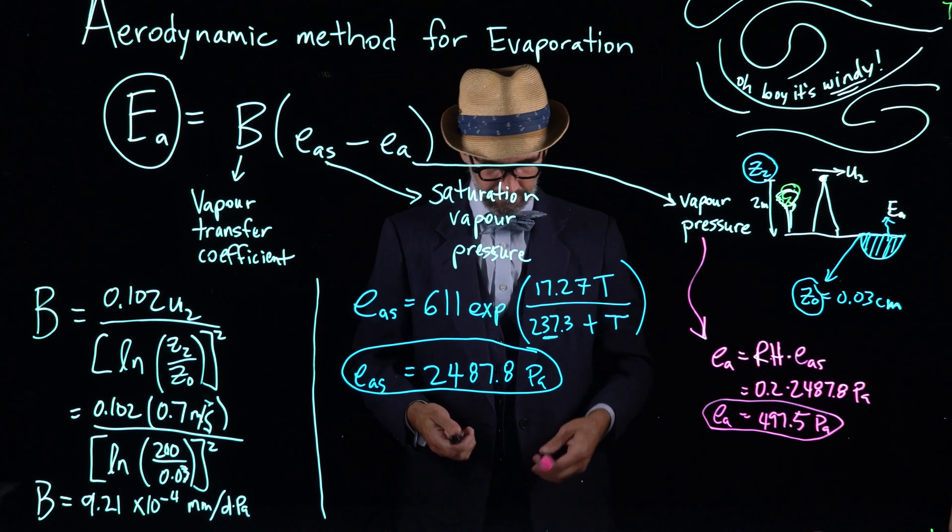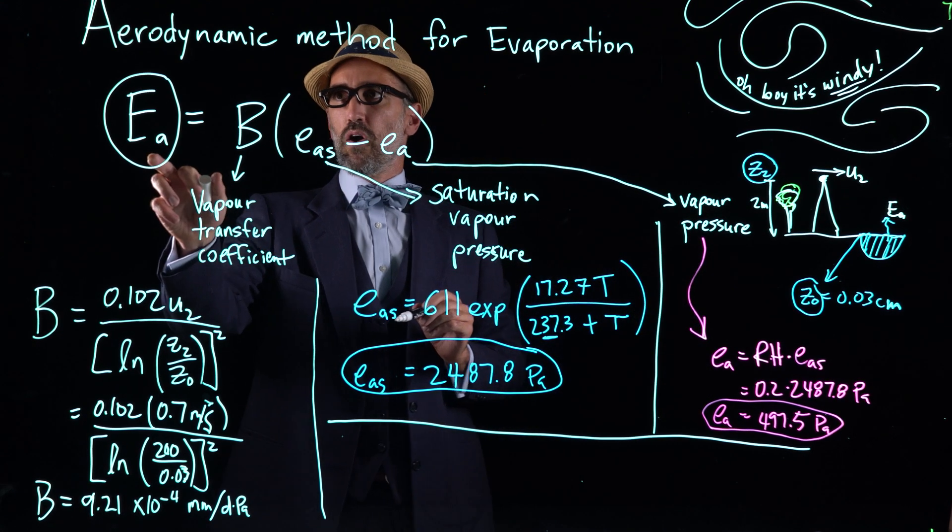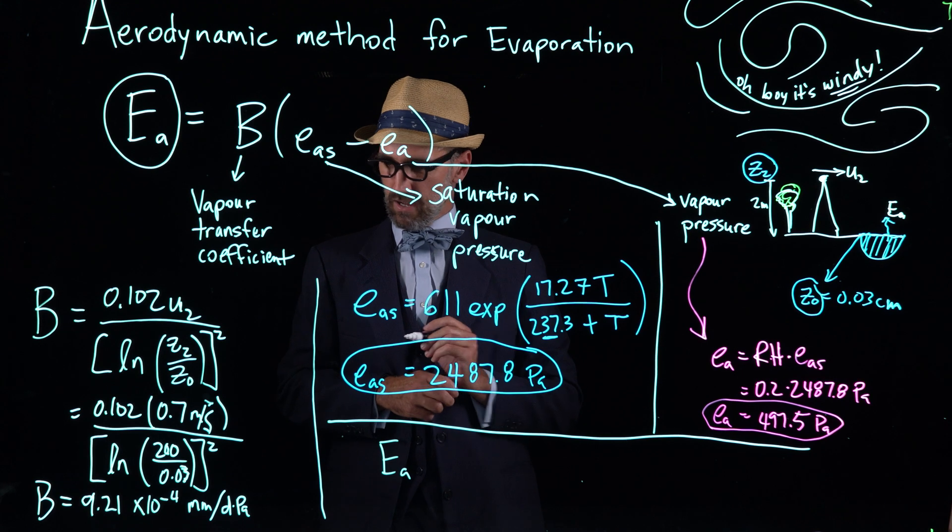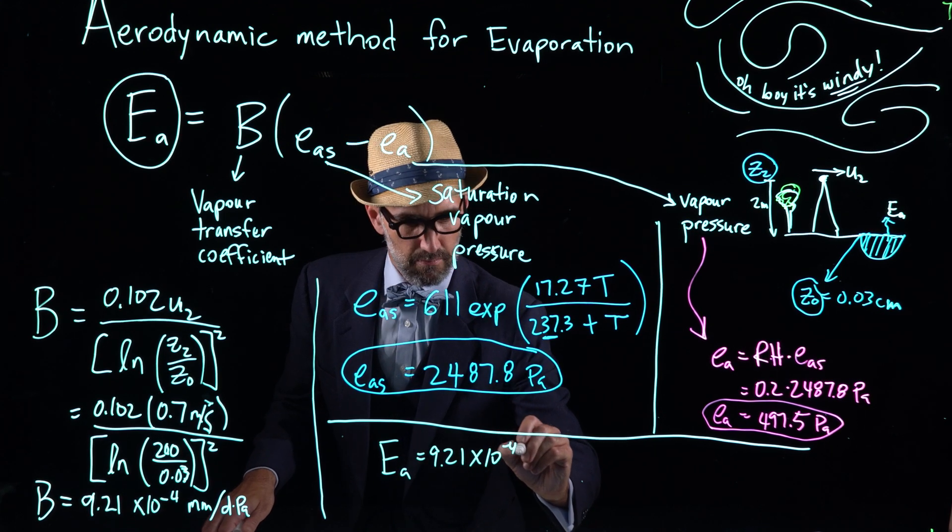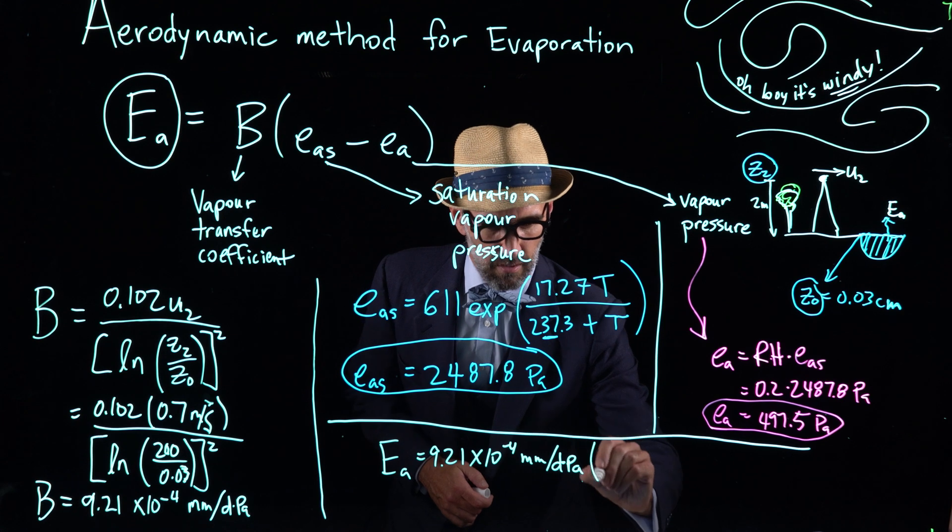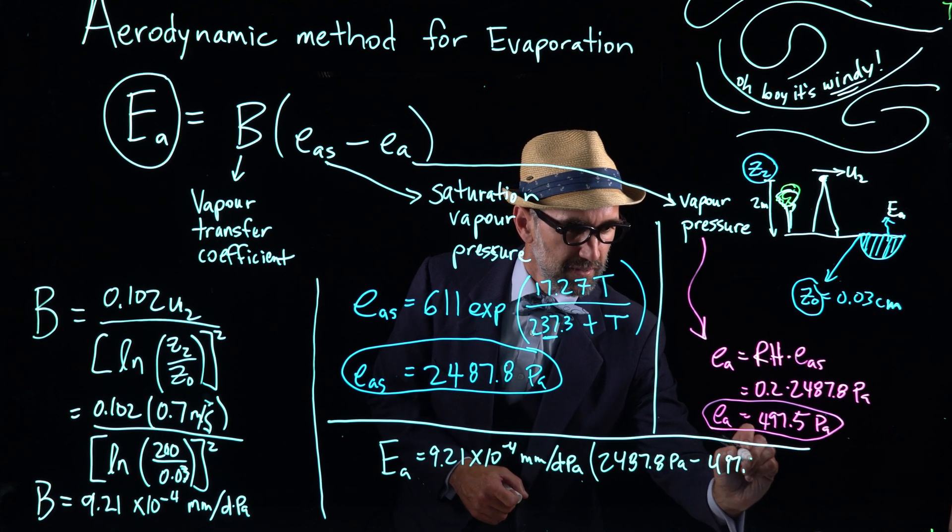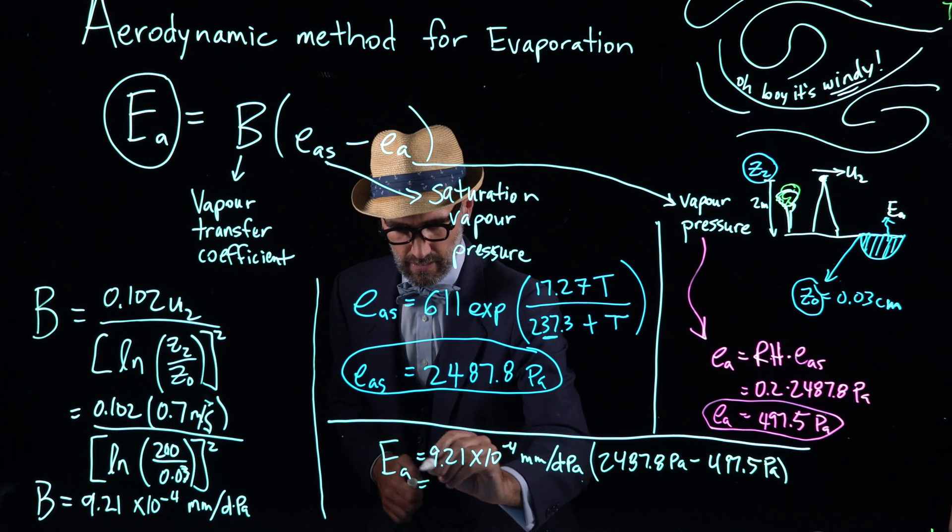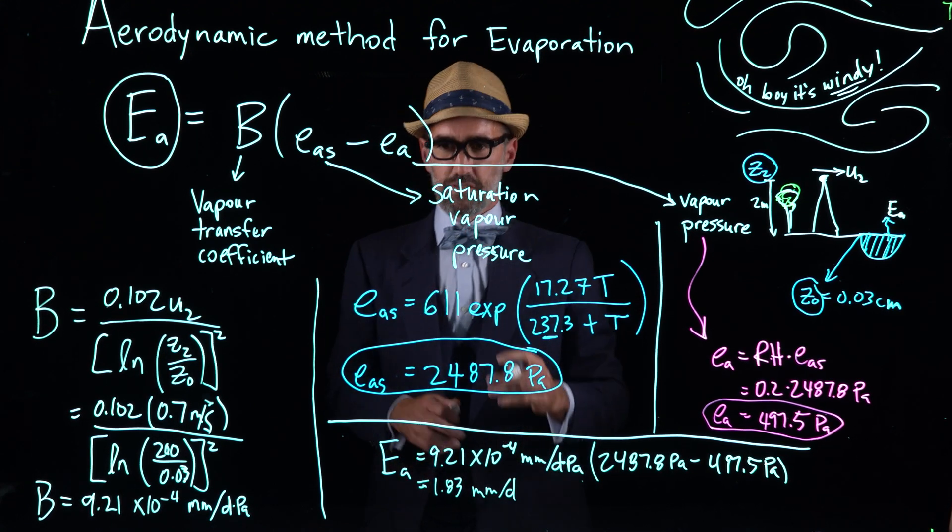So then just to bring it all together, we can calculate our aerodynamic method for evaporation. E sub A is equal to 9.21 times 10 to the negative 4 millimeters per day pascal, subtracting in brackets 2487.8 pascals minus 497.5 pascals. Then the final answer is, and after the unit conversion is, 1.83 millimeters per day.